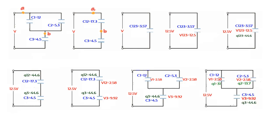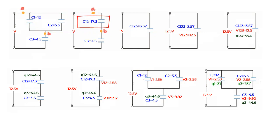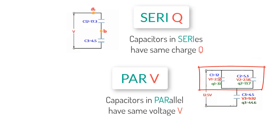A good idea when solving capacitor problems is to run a quick check: if capacitors are connected in series, the equivalent capacitance must be smaller than any individual capacitor; if connected in parallel, the equivalent must be greater than any individual capacitance. Two important mnemonics to remember: 'par V' — capacitors in parallel have the same potential difference but different charges — and 'seri Q' — capacitors in series have the same charge but different potential differences.